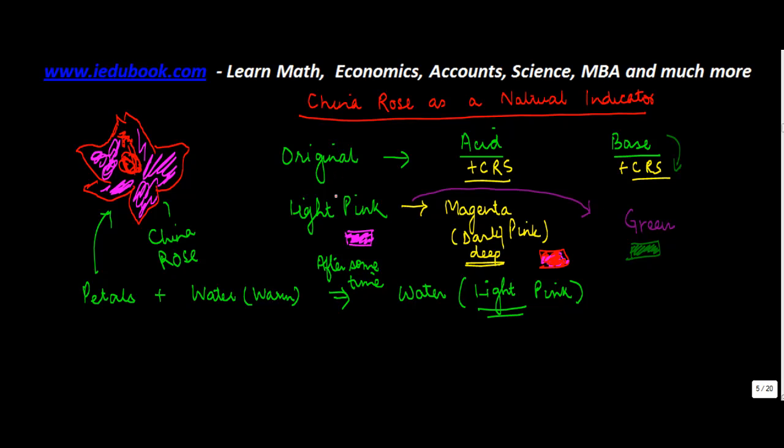So China rose is again used as an indicator just to re-summarize the entire discussion that we had. China rose is originally of the light pink color. When you add an acid to it, it turns dark pink or deep pink which is also known as magenta. And when you add a base to it, it turns green.